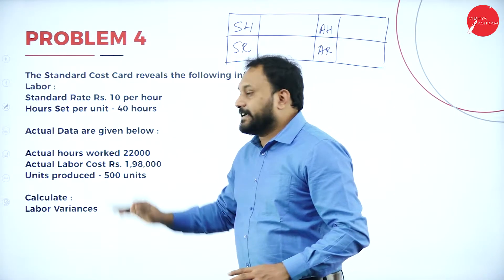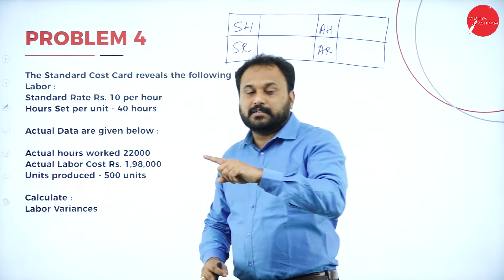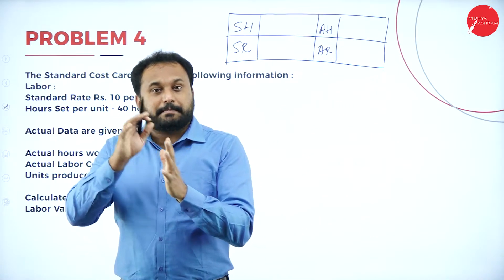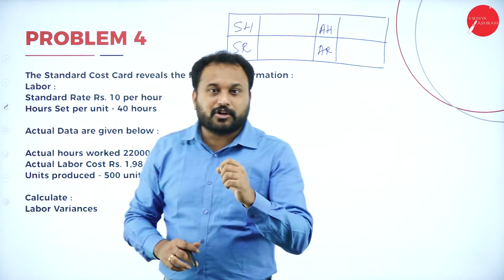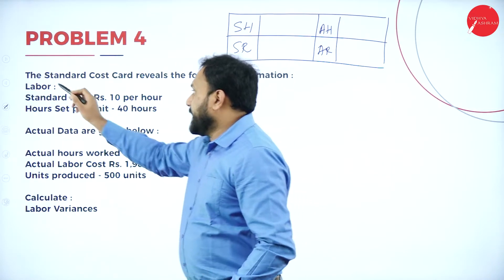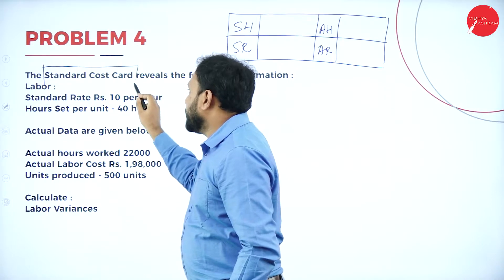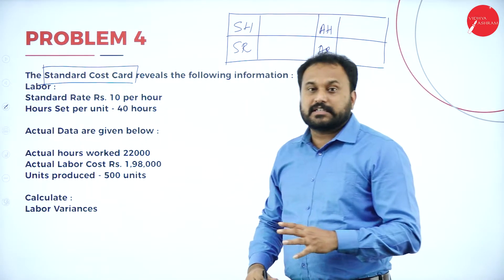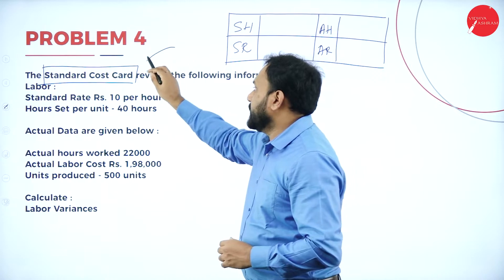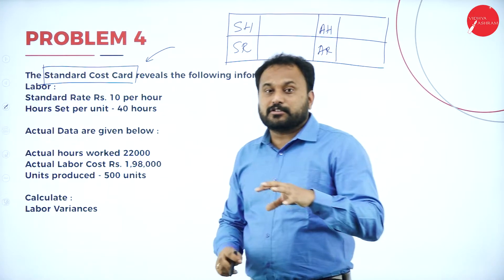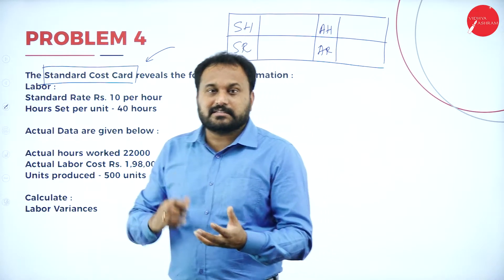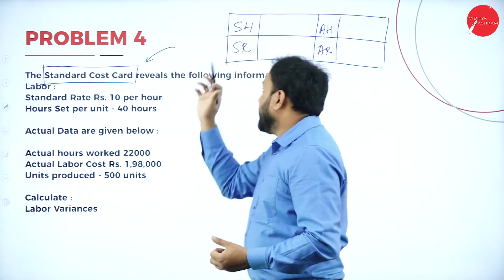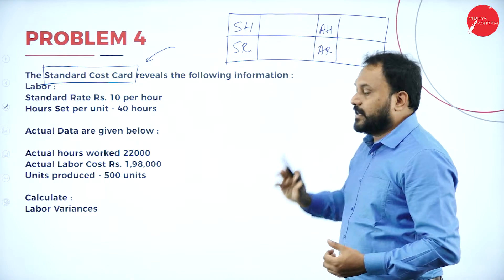They have given the standard cost card. Remember from session 3 on material variances — when they give you a standard cost card, something is hidden. The same applies here for labour. We need to figure out and extract SH, SR, AH, and AR.